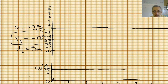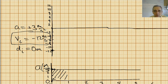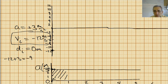Our first point is at negative 12. Now we're going to figure out where the next point is. If we calculate this area here, it's 1 times 3, so the change in velocity is positive 3. Our initial velocity was negative 12, so negative 12 plus 3 equals negative 9. We'll come over to negative 9 at 1 second.